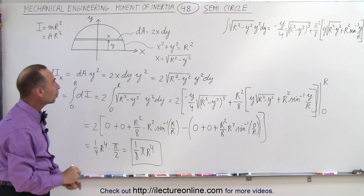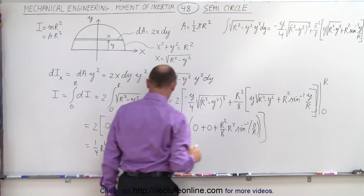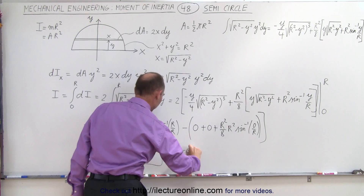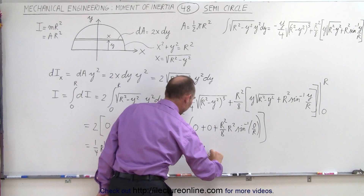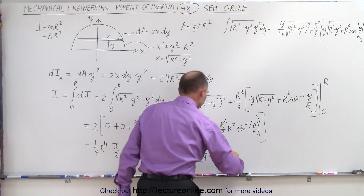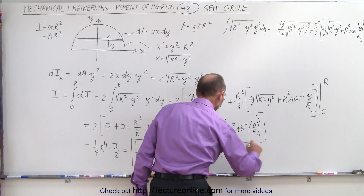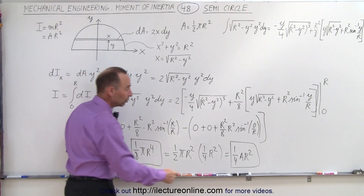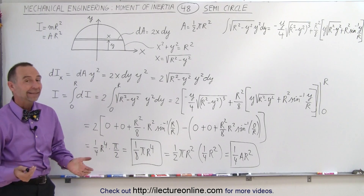Another way of writing it is to recognize that the area of a semicircle is (1/2)πr². So when we factor out (1/2)πr², we get (1/2)πr² times (1/4)r², and this equals (1/4) times the area times r². So the moment of inertia can be written as (1/4)Ar². If we had mass it would be (1/4)mr², or using area, (1/4)Ar². And that's how it's done.